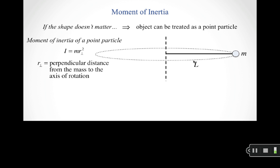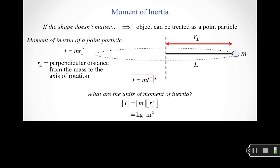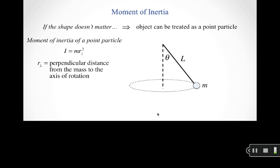For example, consider a mass on the end of a massless string of length L swinging in a horizontal circle. The axis of rotation is the center of the circle, and the perpendicular distance from the axis to the mass is simply L. So the moment of inertia is mL². The units of moment of inertia are kilogram·meter².